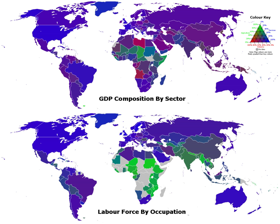Historically, certain manufacturing industries have gone into decline due to various economic factors, including the development of replacement technology or the loss of competitive advantage. An example of the former is the decline in carriage manufacturing when the automobile was mass-produced. A recent trend has been the migration of prosperous, industrialized nations towards a post-industrial society, manifested by an increase in the service sector at the expense of manufacturing, and the development of an information-based economy — the so-called informational revolution.